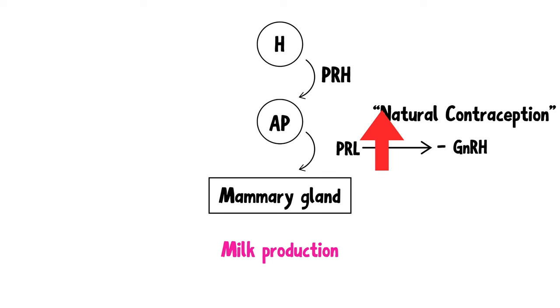Excess prolactin can cause osteoporosis, as gonadotropins like estrogen protect bones. So inhibiting estrogen can lead to the breakdown of bones.